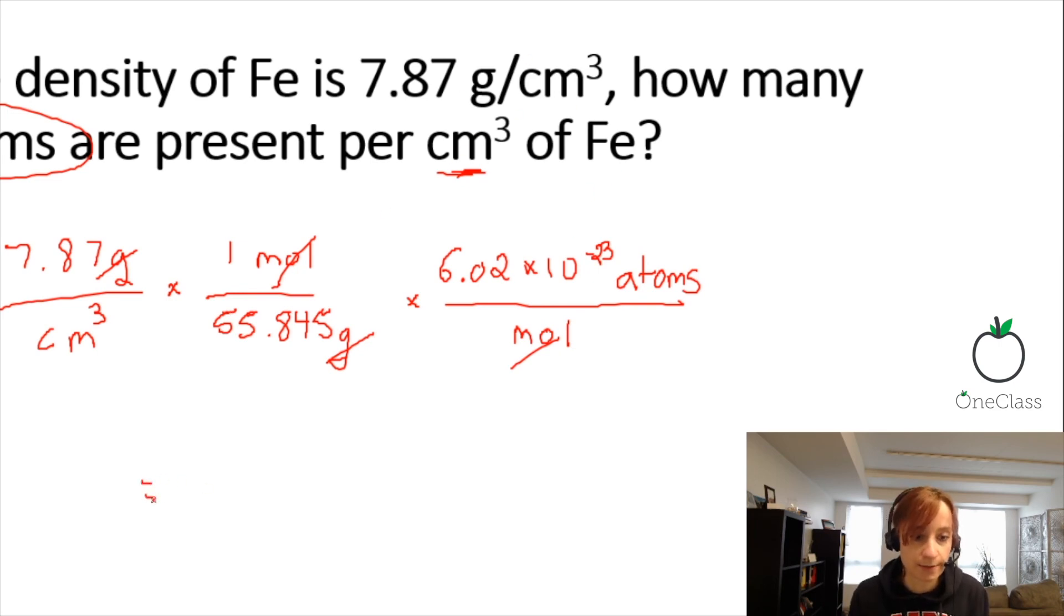After doing all the calculations, we end up with 8.48 times 10 to the 24 atoms per centimeter cubed.